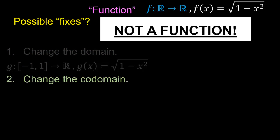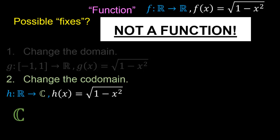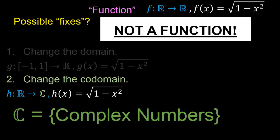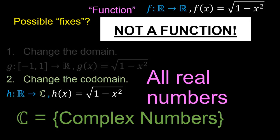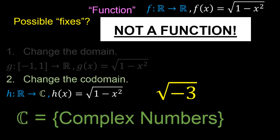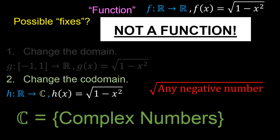A second possible fix is to change the co-domain. In the function h, we keep the domain the same as before and we keep the assignment rule the same. However, now the co-domain will be changed to ℂ — that is, the set of all complex numbers. All we need to know about complex numbers at this point is that the set includes all real numbers and also numbers such as the square root of negative 3 — more generally, the square root of any negative number. Hence, the newly constructed function h is indeed a function because it maps each real number to some single complex number, i.e., each element in domain ℝ to some single element in co-domain ℂ.